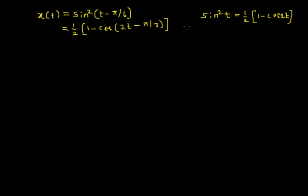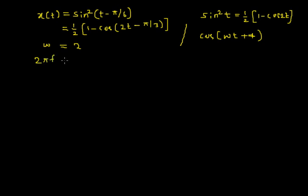By comparing this with the standard signal cosine of omega t plus phi, I can get the angular frequency omega is equal to 2. I already know that omega is equal to 2 pi f, which is equal to 2. So I will get f is equal to 1 by pi, and T is equal to 1 over f, which is equal to pi.